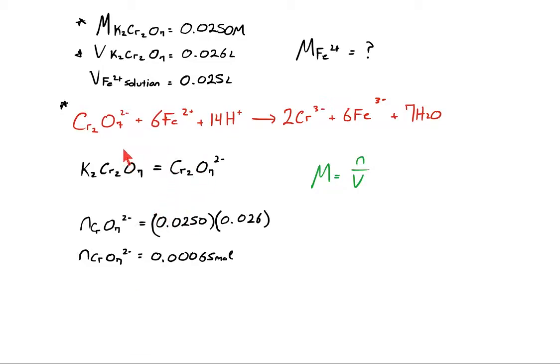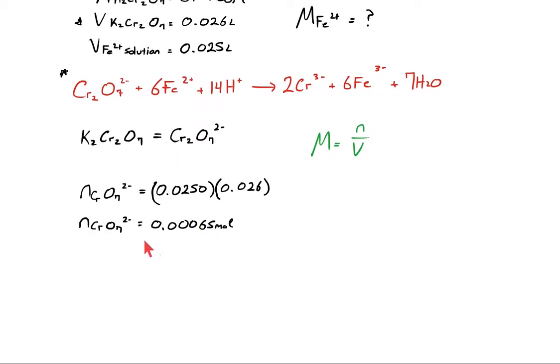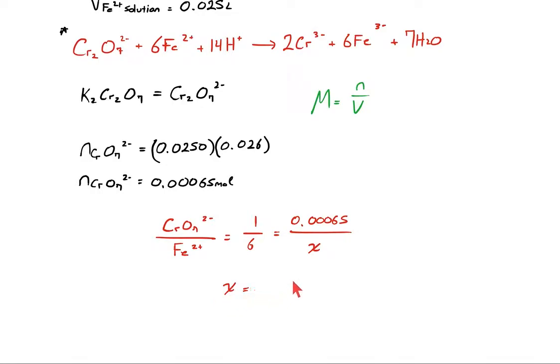Now we're going to use this stoichiometric relationship, the one that says the dichromate ion as opposed to the iron ion always appears in the ratio of 1 to 6. Plug in 0.00065 for the dichromate and x for the moles of iron ion. Solve for x and you get that the moles of the iron ion is going to be equal to 0.0039 moles.